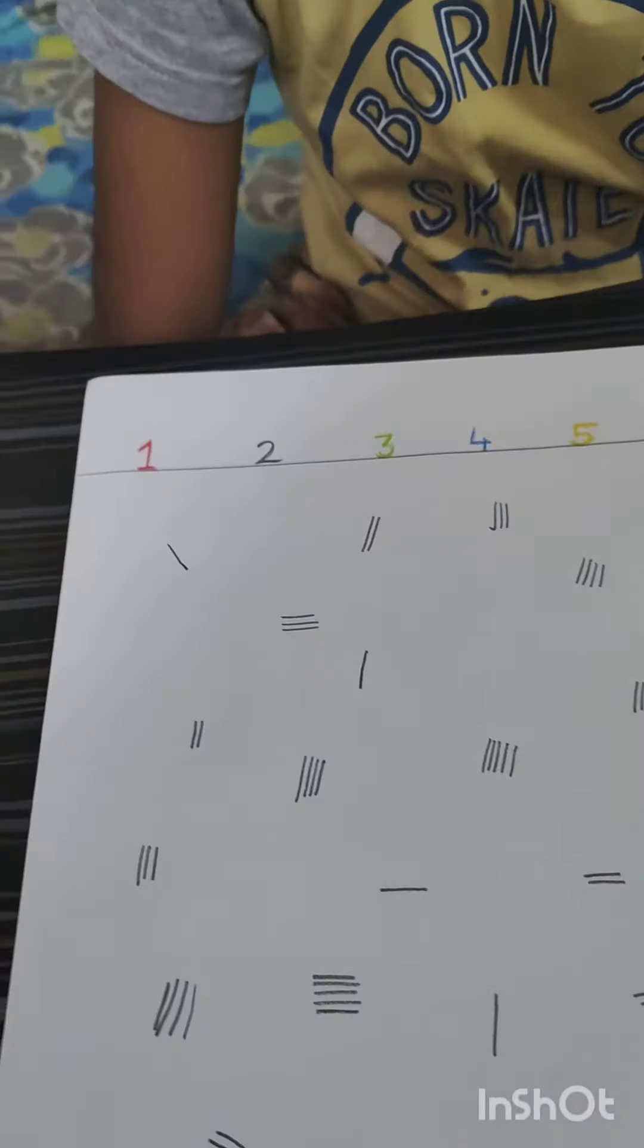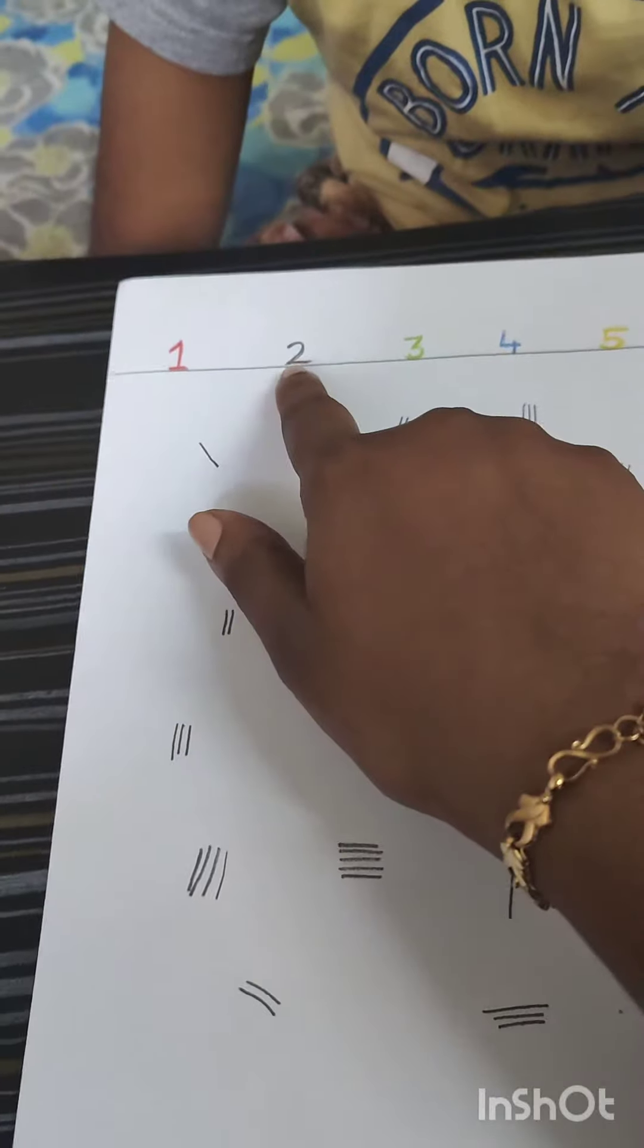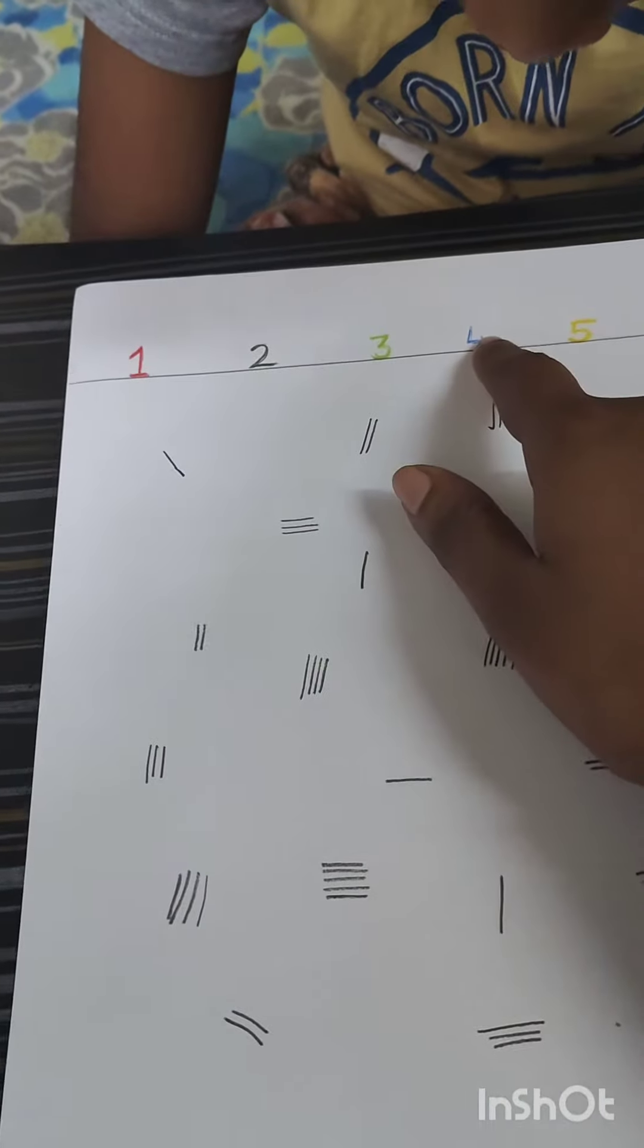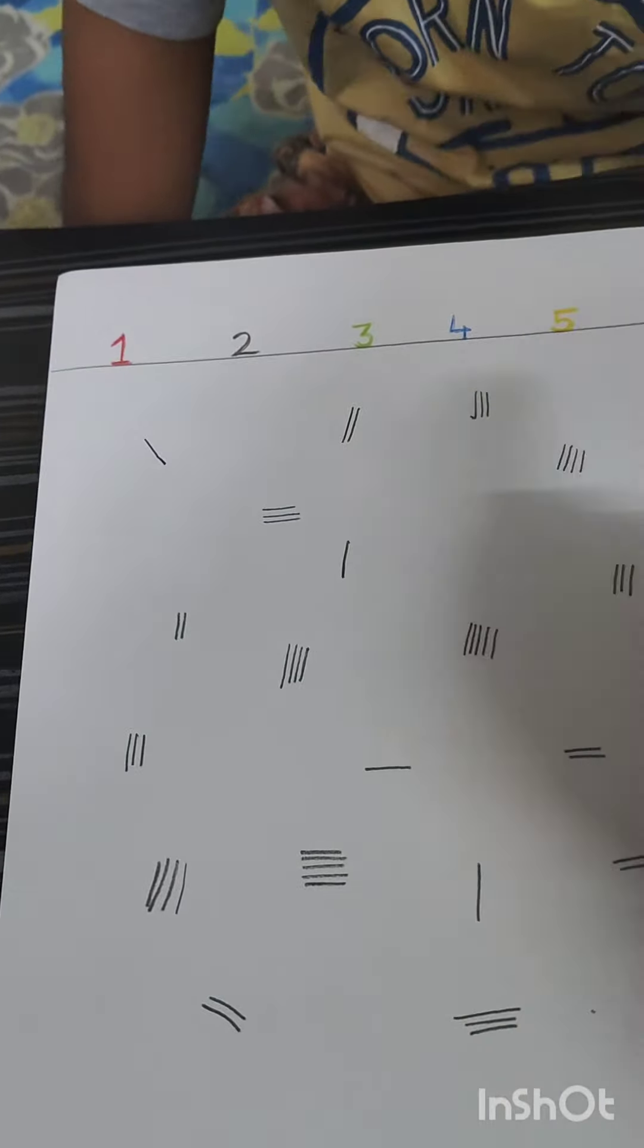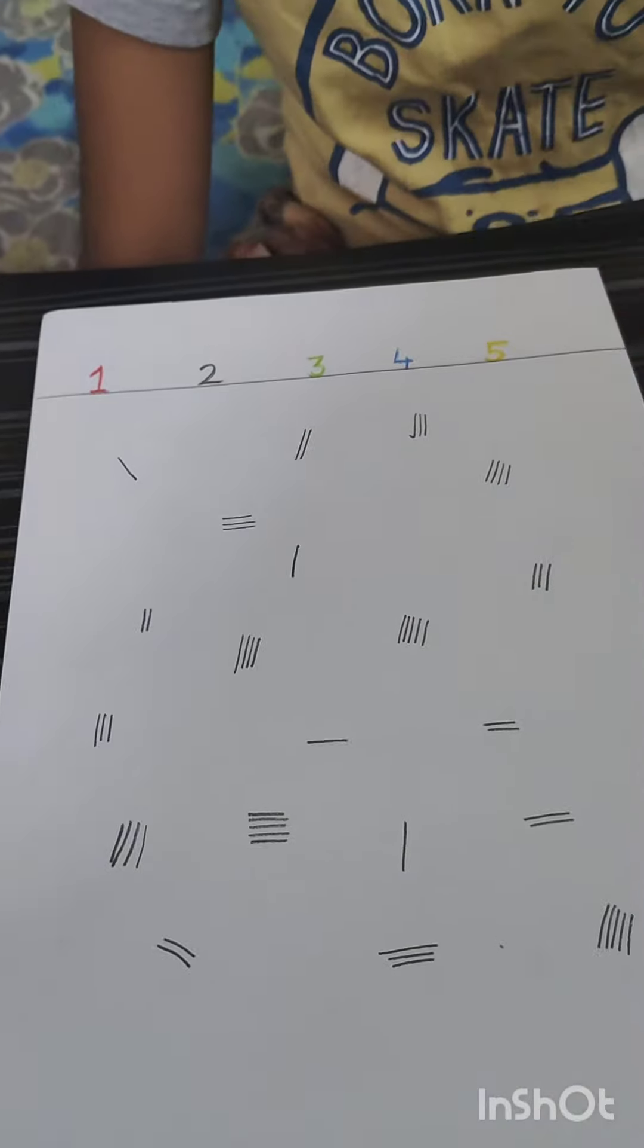Are you ready? Yes, okay. We are going to do visual worksheets. So this is very simple: red color one, black color two, green three, blue four, yellow five. Okay, now according to the color, according to the number, you have to circle it. Start one.